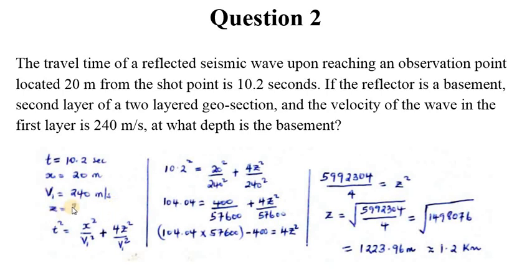z is the depth here. We bring in the formula t² = x²/v₁² + 4z²/v₁². This again can be derived theoretically. If you go back to your notes on seismics and travel times you will find this formula or you will see how it is derived. So we just substitute the values into this formula.